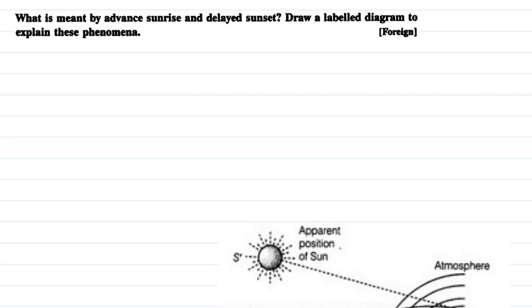Hello everyone, hope you are doing well. I'm going to explain this question in this video. The question says: what is meant by advanced sunrise and delayed sunset? Draw a labelled diagram to explain these phenomena. Let us see the answer.